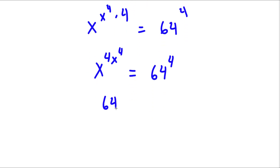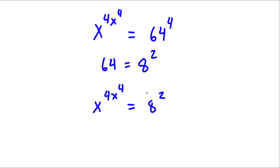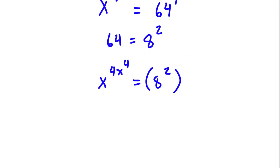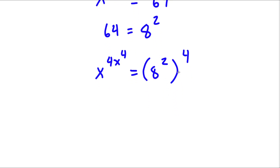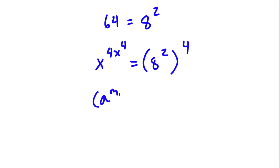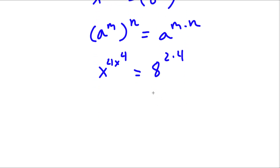Now, 64 is the same thing as 8 to the power of 2, or 8 squared. So I'm going to substitute in 8 squared for 64. So now I have x to the power of 4x to the power of 4 is equal to 8 squared to the power of 4. Remember how if I have something in the form a to the power of m to the power of n, this is equal to a to the power of m times n. So 8 to the power of 2 to the power of 4 equals 8 to the power of 2 times 4. And 2 times 4 is 8, so I have x to the power of 4x to the power of 4 is equal to 8 to the power of 8.